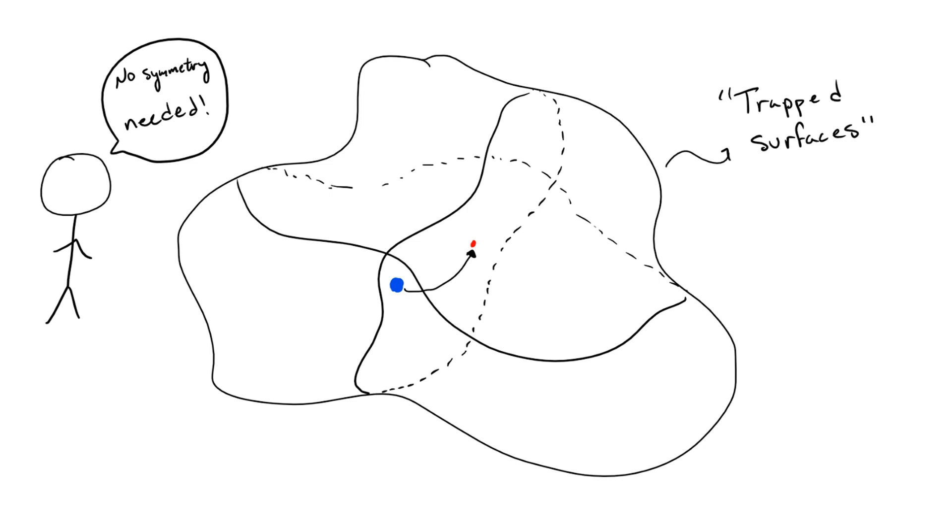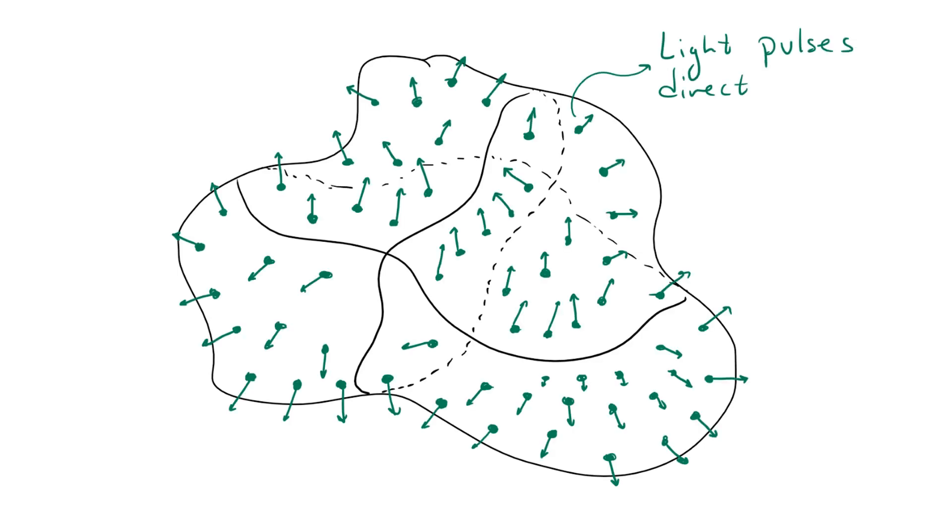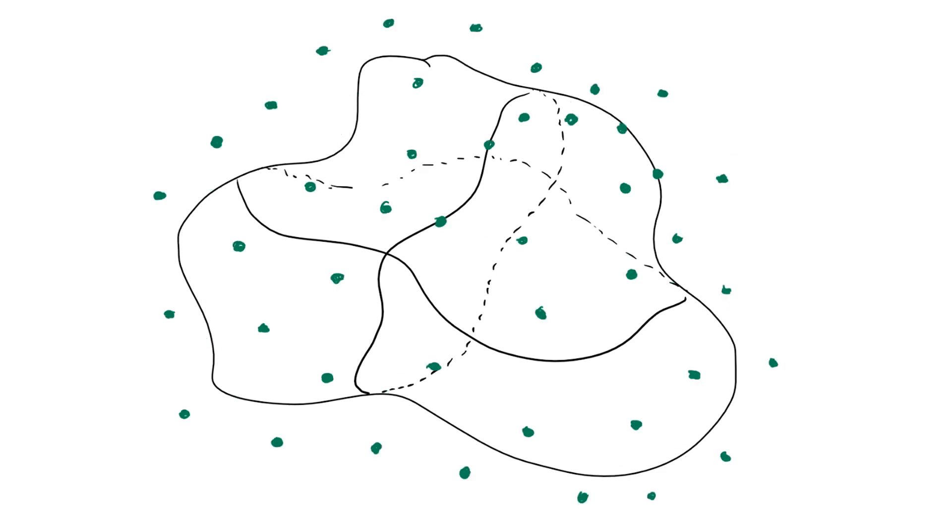These special surfaces are known as trapped surfaces because any matter or light which fall inside of these surfaces can never escape. The details are quite complicated, but the idea is simple. Consider some surface in spacetime. Now think about trying to send a pulse of light outwards from that surface at every point, directed perfectly perpendicular to the surface at each given point. If the light pulses diverge from each other and go off to infinity, then the surface is not trapped.